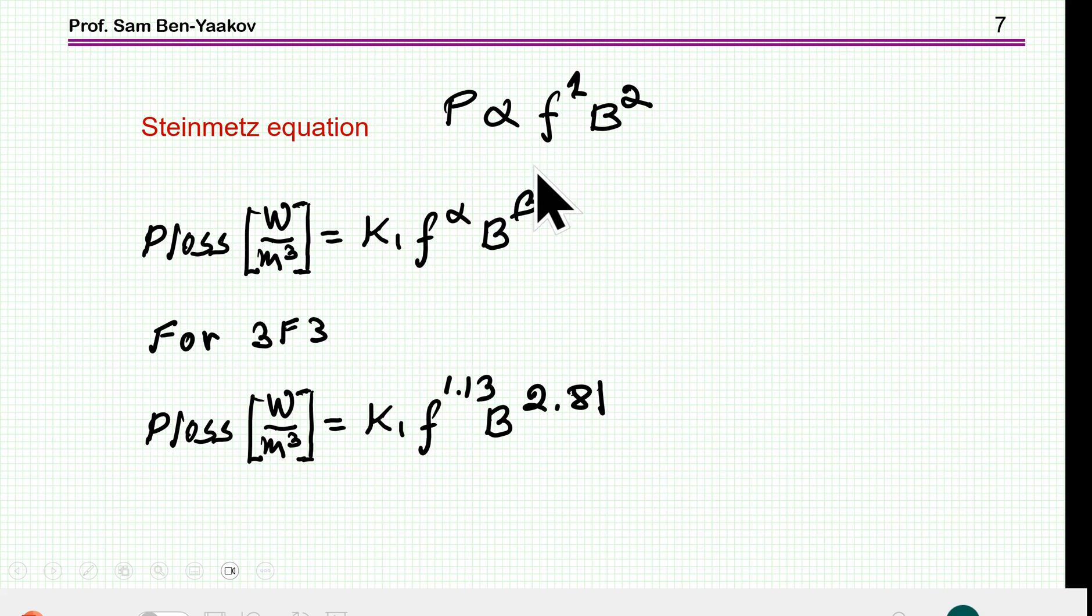The losses are being measured and then fitted to this template when alpha and beta are fitted to the data set that is obtained experimentally. Now, for example, for 3F3, f to the power of 1.13 and B to the power of 2.28 is the end result of this fitting.